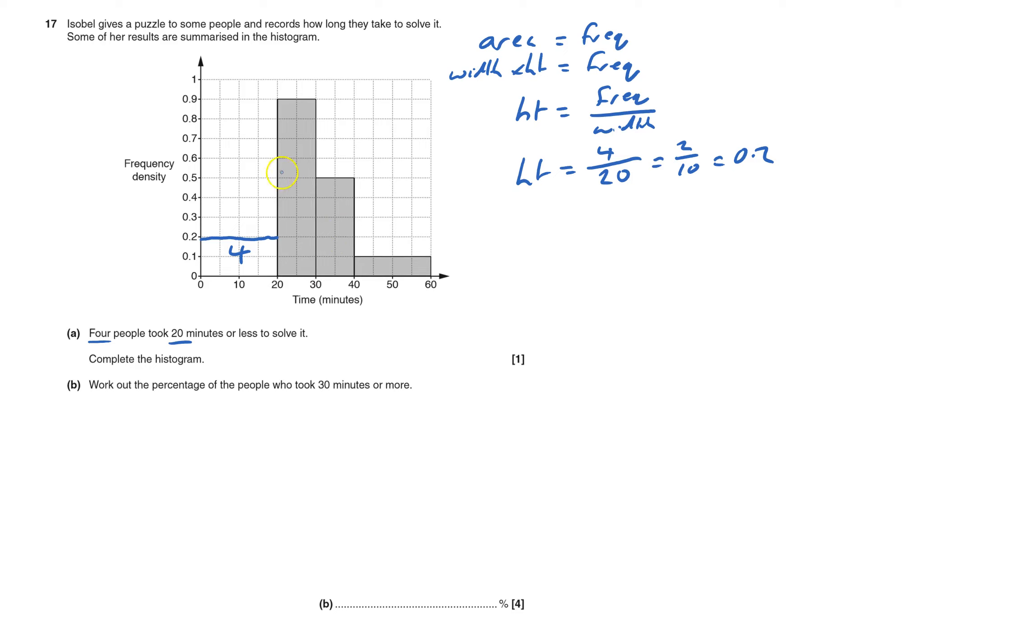This one here, the width is 10 times the height of 0.9, so that will be 9. This one here, the width is 10 times the height of 0.5, and that will be 5. And the last one, the width is 20 times the height of 0.1, and 20 times 0.1 equals 2.